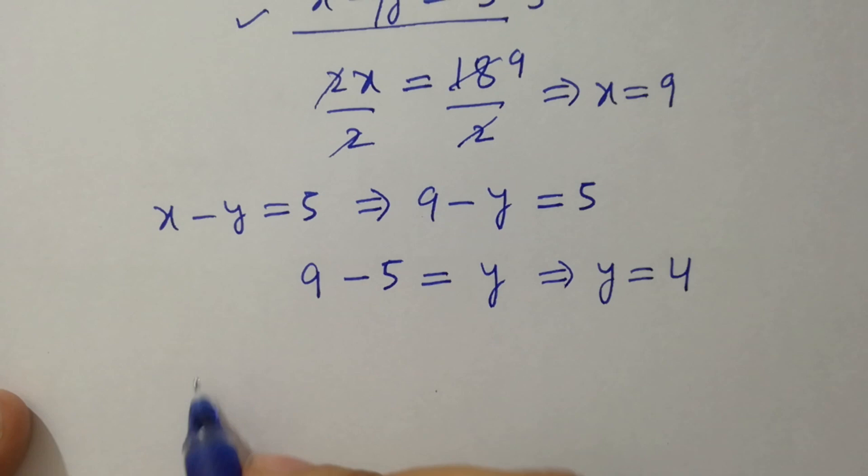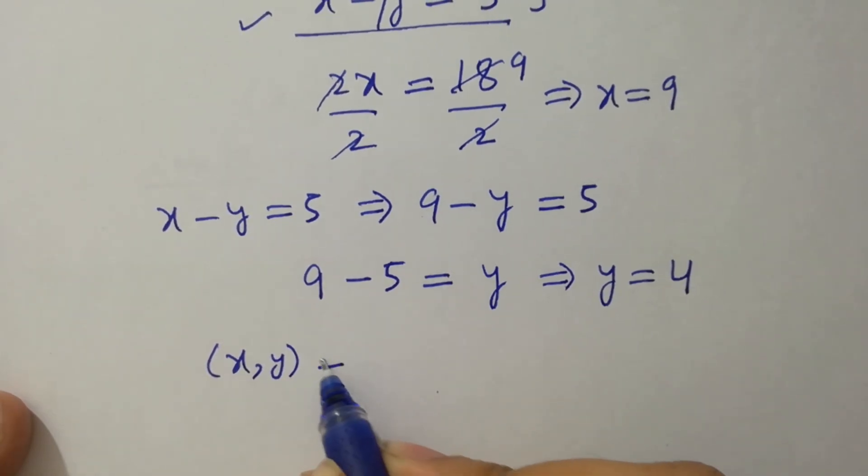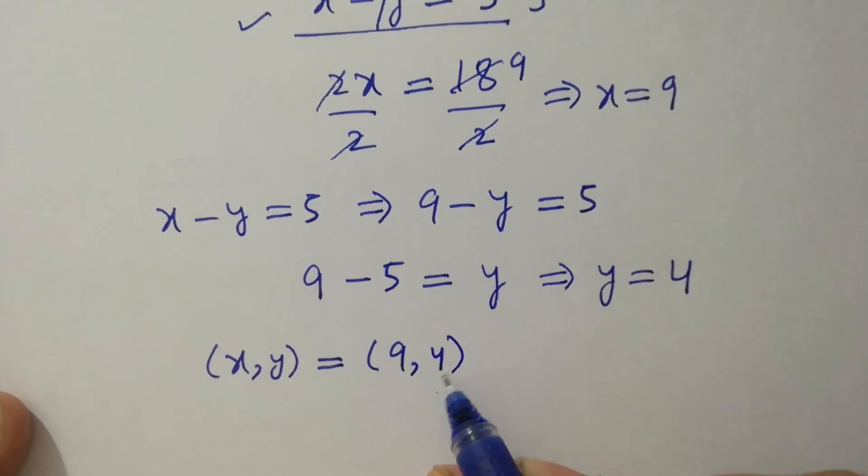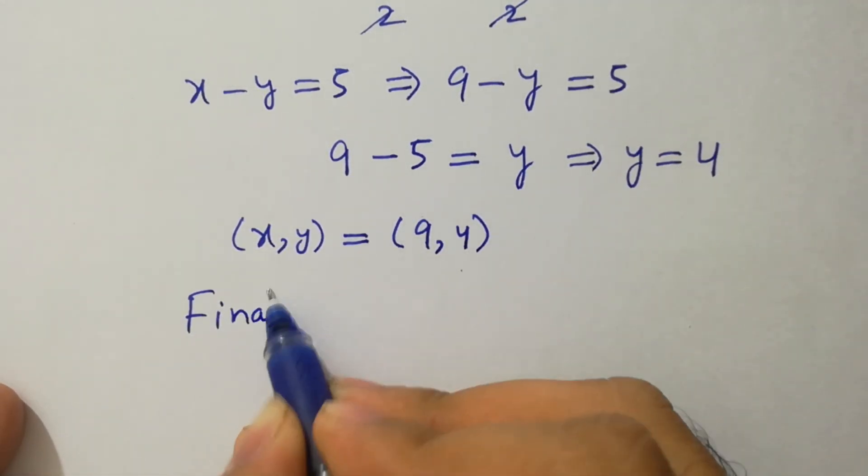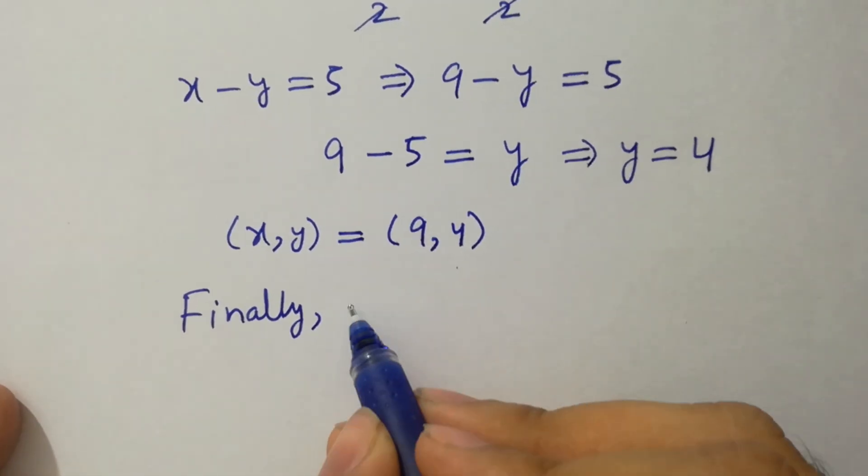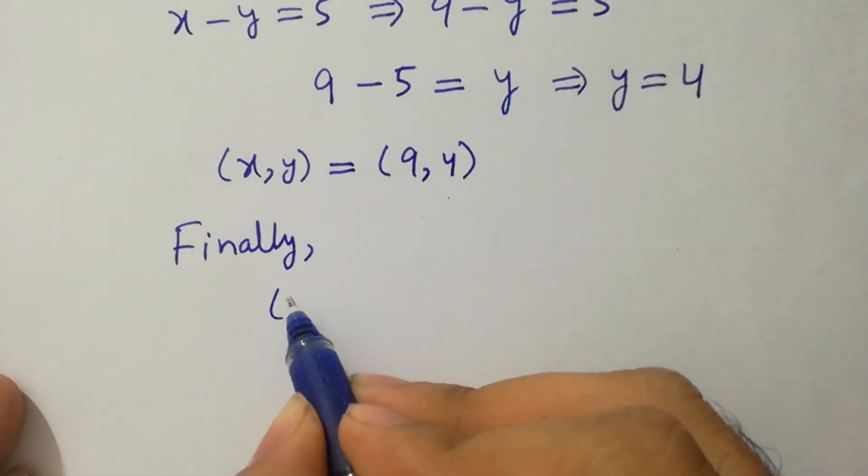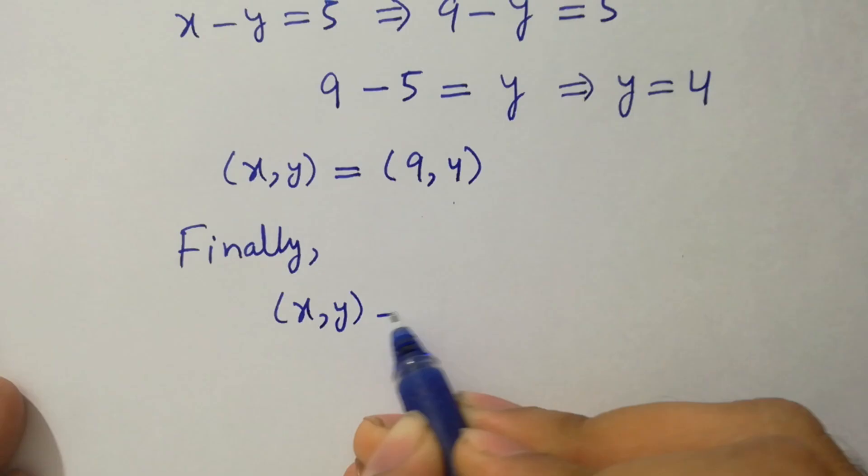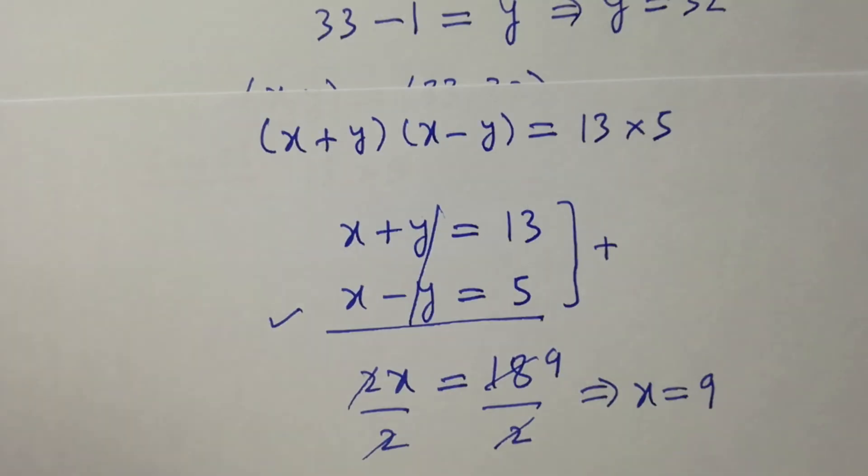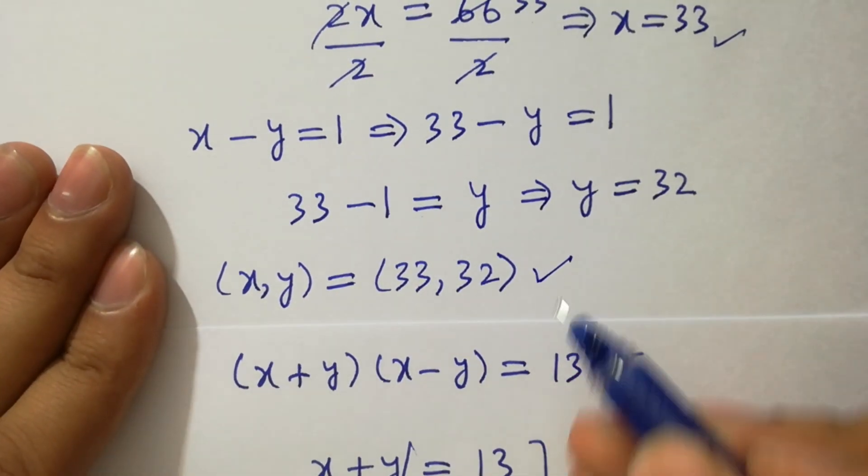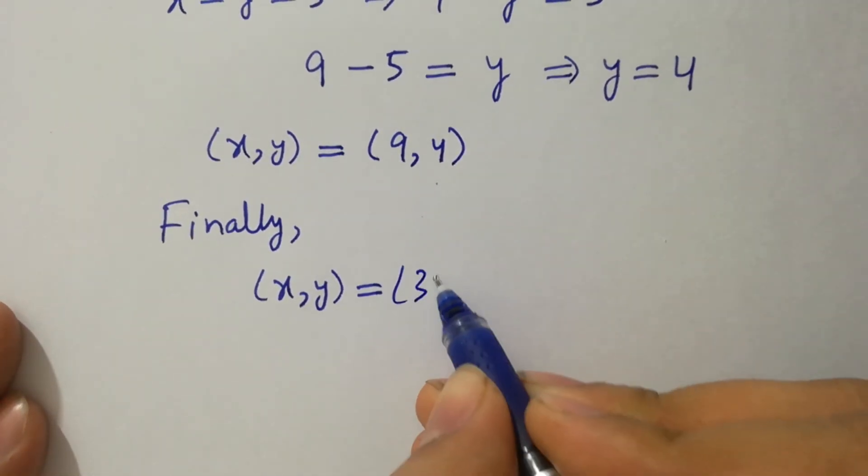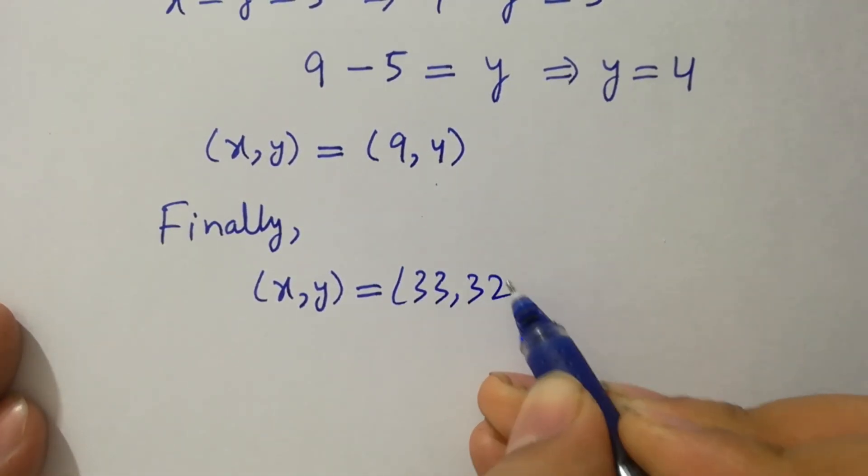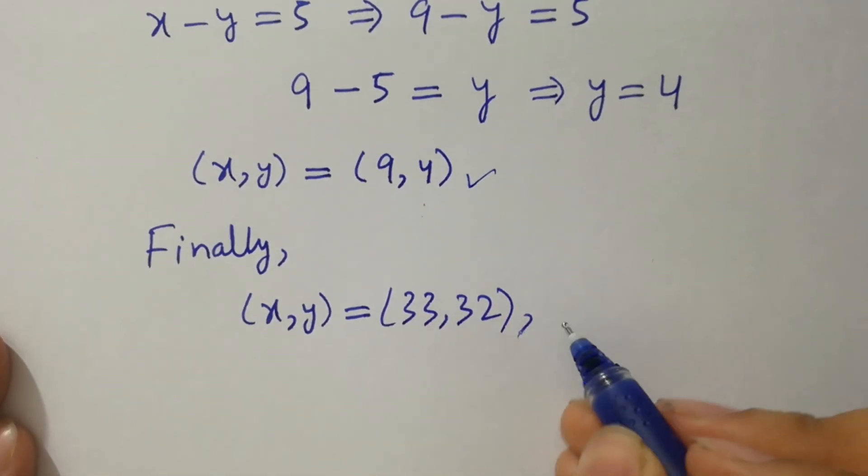The value of x and y equal to 9 and 4. So finally, values of x and y equal to 33, 32 and also 9 and 4.